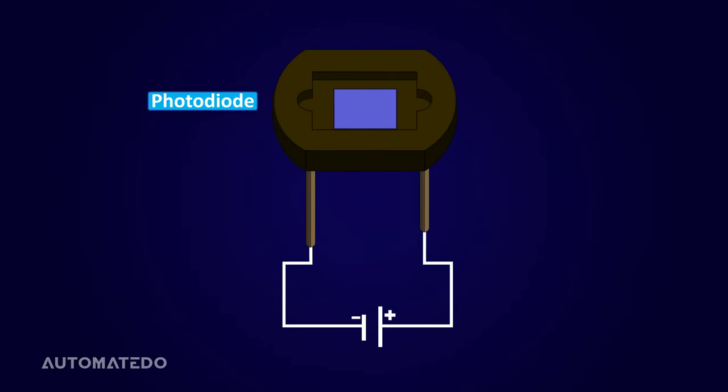A photodiode is a PN junction light-sensitive semiconductor device that when exposed to radiation produces an electrical current. It means a photodiode receives light as input and generates current as output.